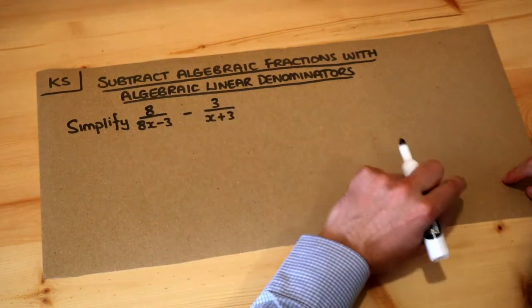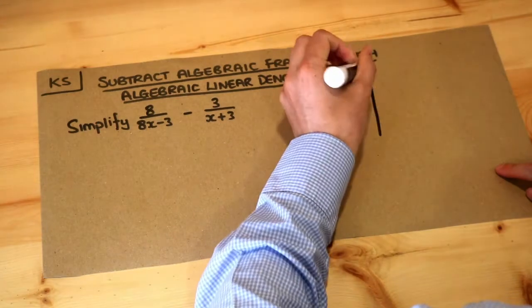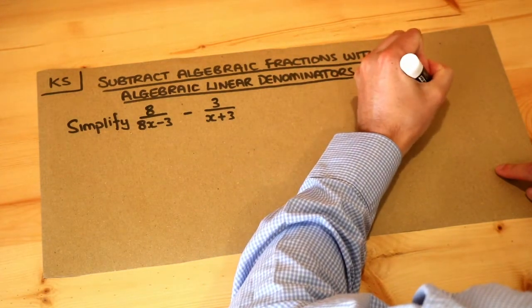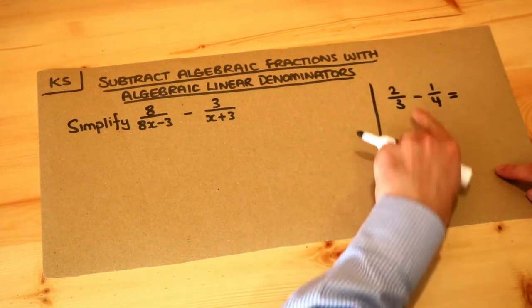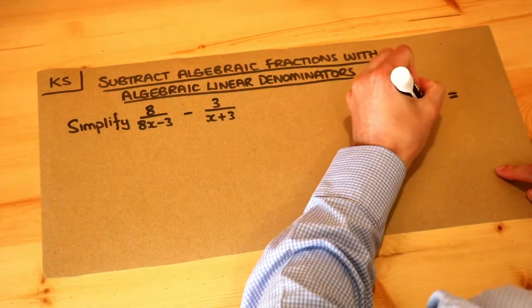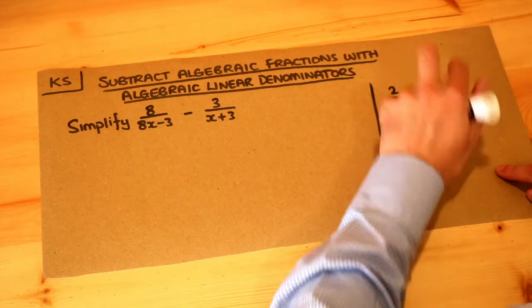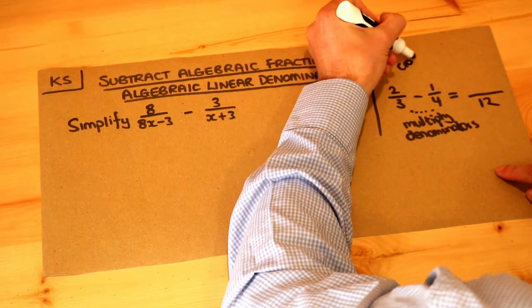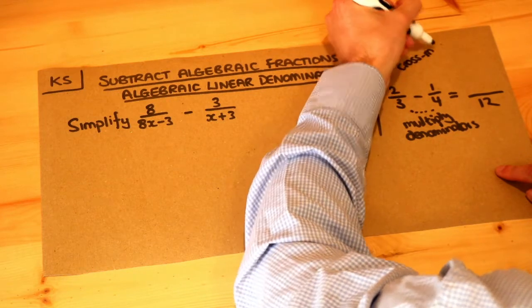Now let's think how we usually subtract two fractions. If we had say two thirds and we subtracted a quarter, well a quick way you could do it is to multiply the denominators. So we do three times four which is twelve and we do something called cross multiply the numerators.